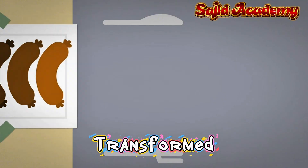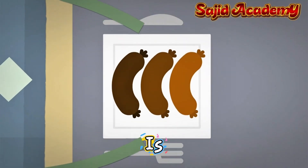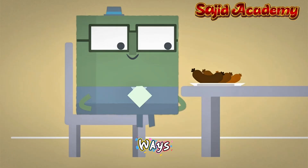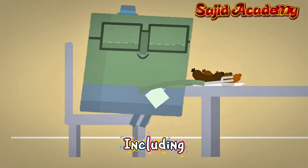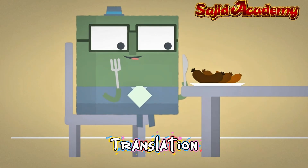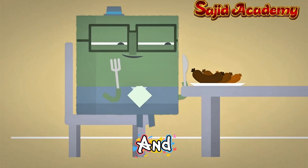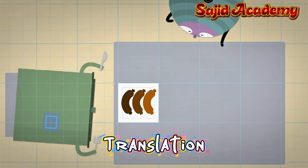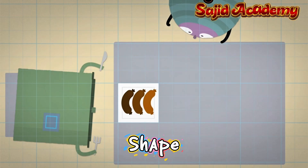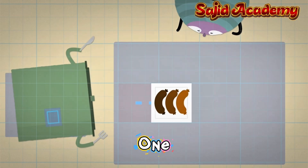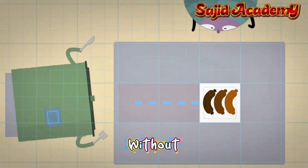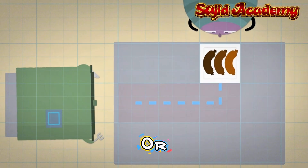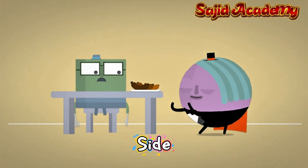If a shape is transformed, its appearance is changed. This can be done in a number of ways, including translation, reflection and rotation. Firstly, translation. This is when a shape slides from one place to another without turning. You can move it up or down, or from side to side.